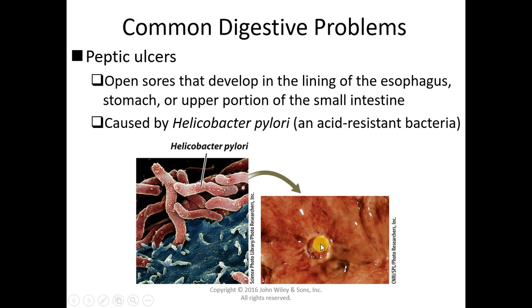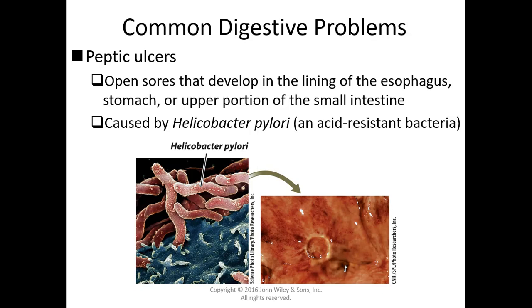Before moving on to the small intestine, we should mention ulcers. Ulcers are erosions in the wall of the stomach — they can also occur in the small intestine. We now know that most ulcers are caused by an acid-resistant bacteria called H. pylori, and for that reason antibiotics have become the most important part of treatment for most ulcers.